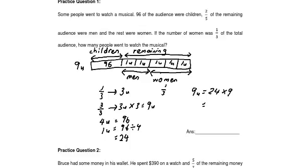24 multiplied by 9 equals 216, which is also the answer. Moving on to the next question.